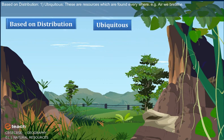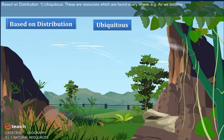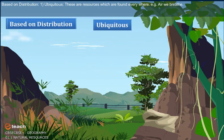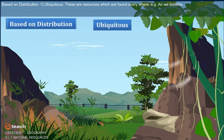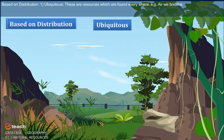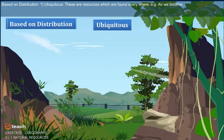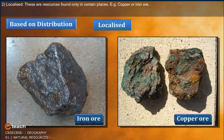Based on Distribution: Ubiquitous Resources are those which are found everywhere. For example, the air we breathe. Localized Resources are those found only in certain places. For example, copper or iron ore.